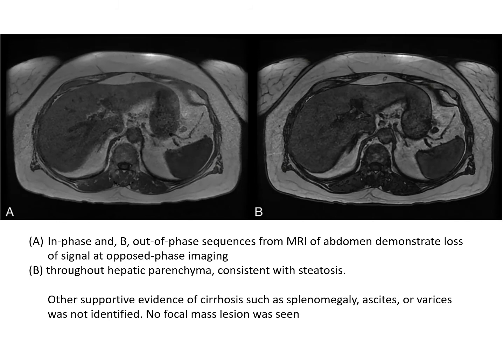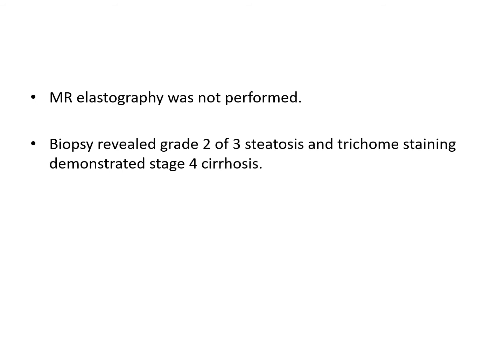An MRI with and without contrast was done. Comparing the in-phase image A with the out-of-phase image B, there is a signal drop in the entire liver, consistent with steatosis. Other supportive evidence of cirrhosis such as splenomegaly, ascites, or varices was not identified, and no focal mass lesion was seen on MRI. MRI elastography was not performed. Biopsy revealed grade 2 of 3 steatosis, and trichrome staining demonstrated stage 4 cirrhosis.